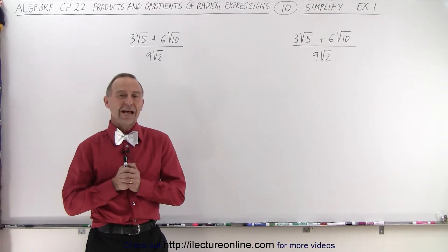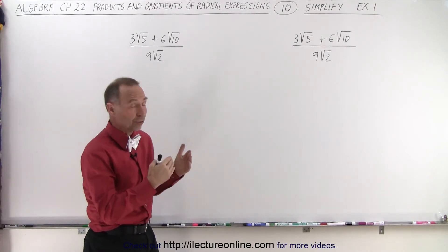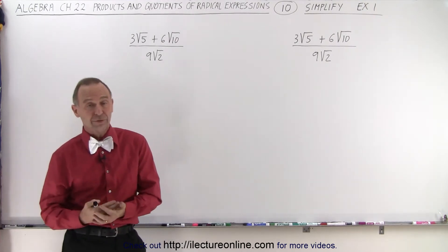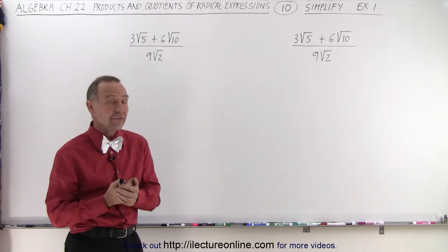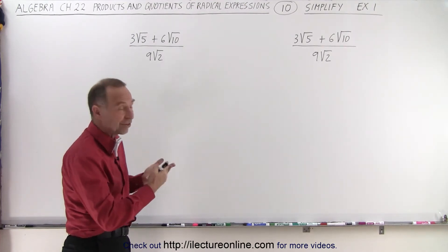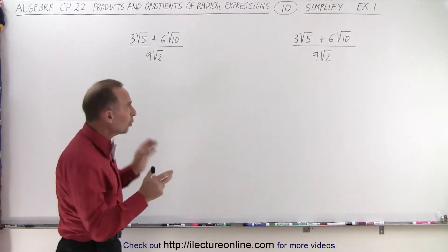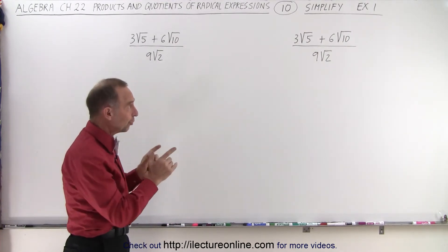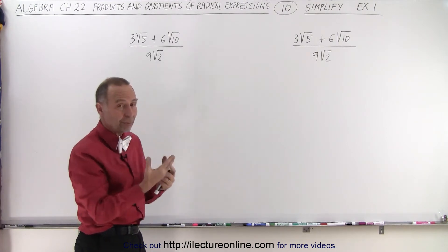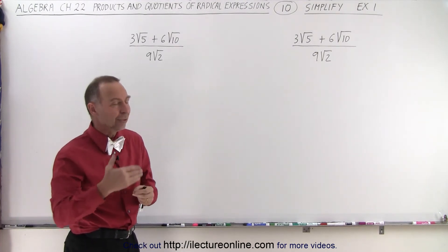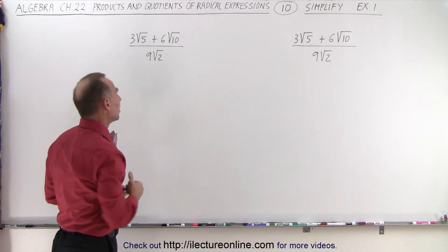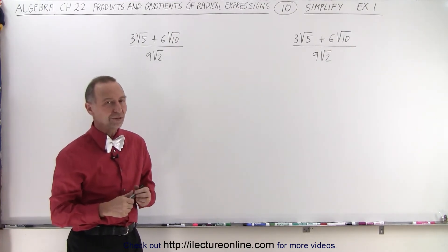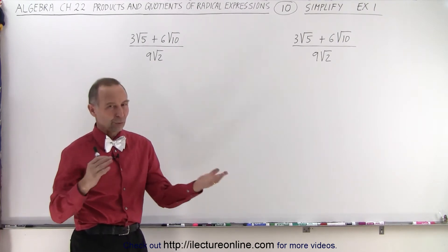Welcome to our lecture online. We're going to take a look at an expression and simplify it, employing whatever techniques we've learned — probably factoring out common factors and rationalizing the denominator. Notice we have the very same problem on the board twice. First we'll factor and simplify as much as possible, then rationalize the denominator. On the other side, we'll rationalize first, then simplify — hopefully getting the same answer so you can decide which way is easiest.